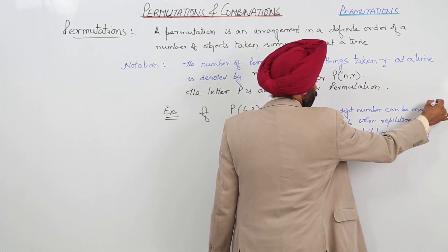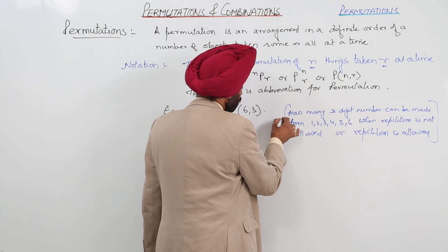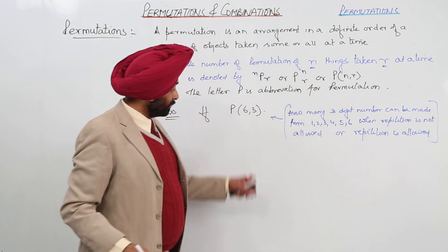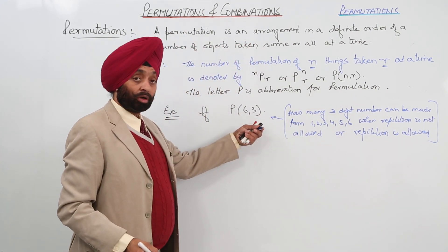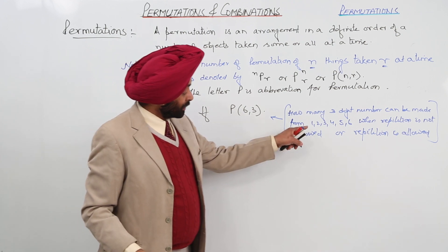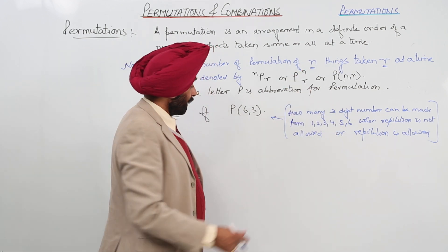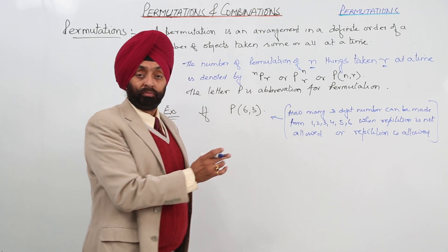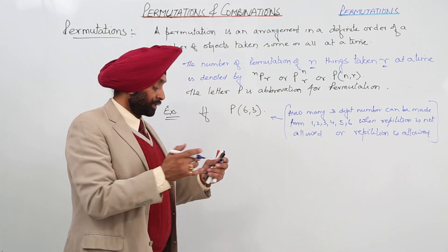Now, this question basically says what I have gone for this notation. 6, 3. 6 digits are there: 1, 2, 3, 4, 5, 6 and we have to take 3 at a time. We have to use 3 at a time.